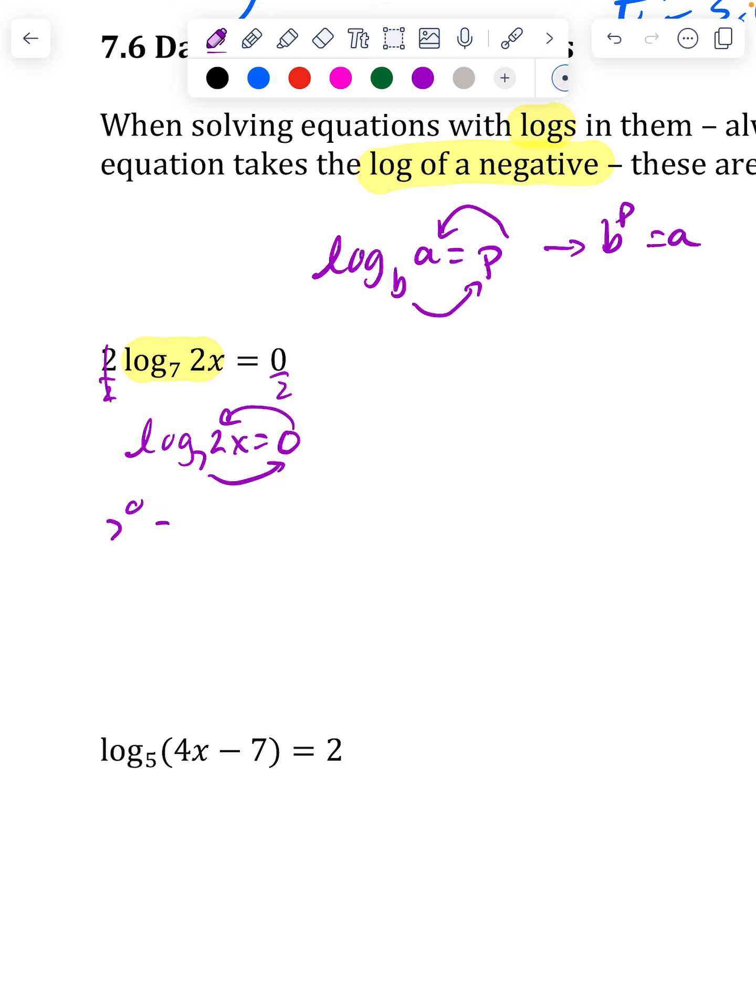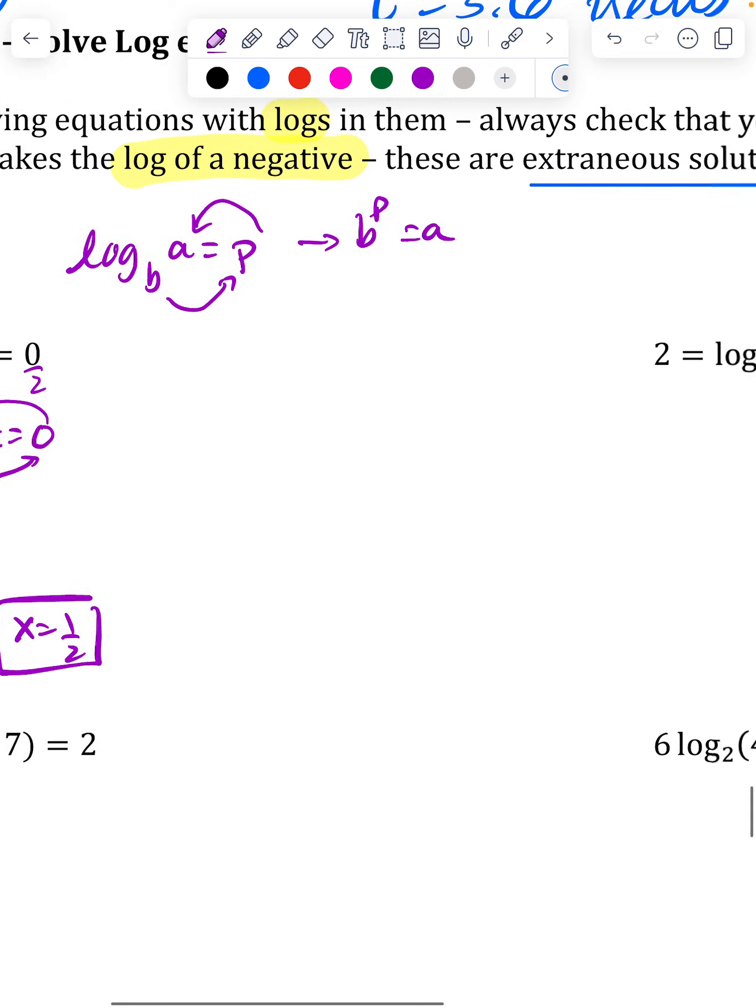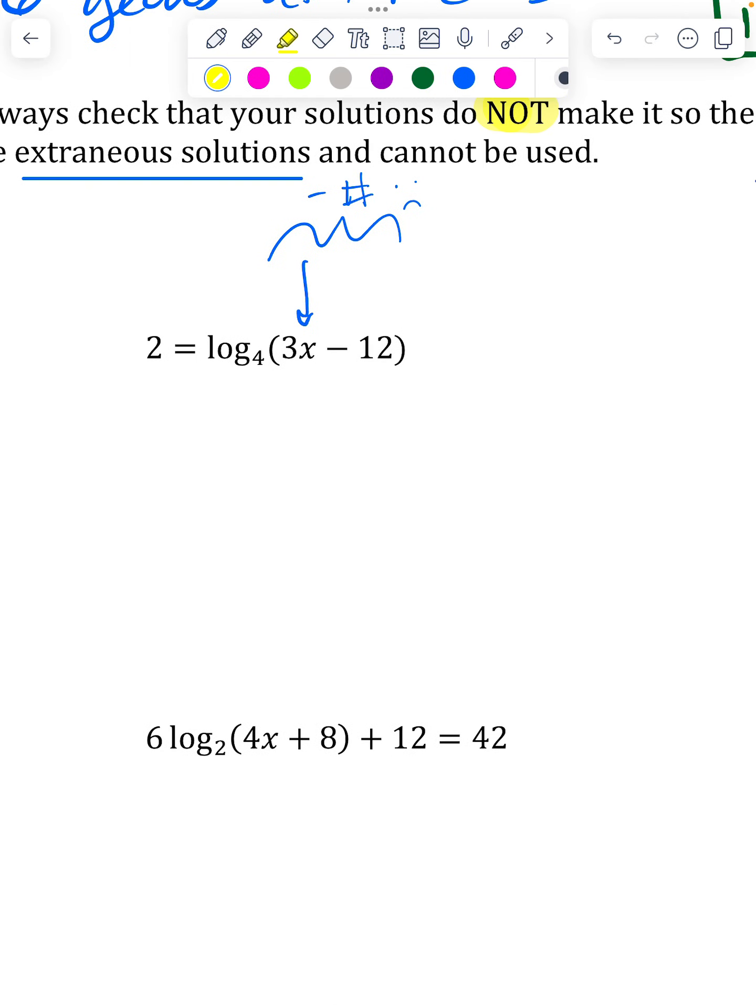So let's do that. If we start in the base, we'll be at 7, take it to the zero power, come back around, and that'll equal 2x. Anything to the zero power is 1. When I divide it by 2, my x is one-half. Clearly plugging a half in for that x will not force you to take the log of a negative, so you're good to go.